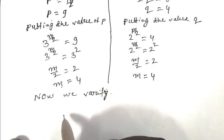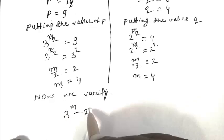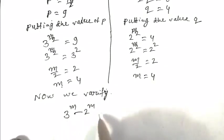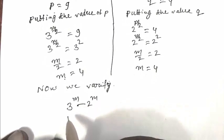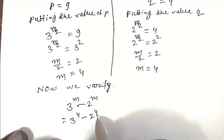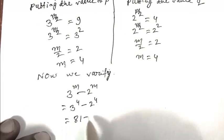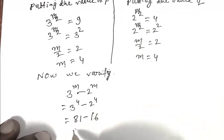Verify. So 3 to the power M minus 2 to the power M, that is 3 to the power 4 minus 2 to the power 4, that is 81 minus 16, that is 65.